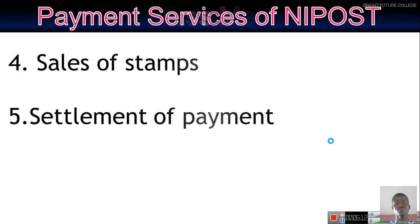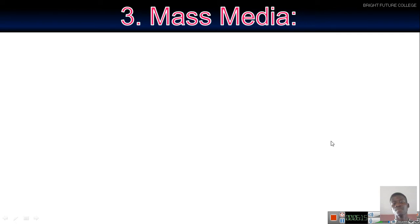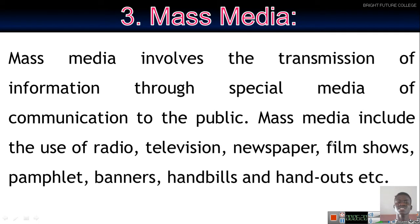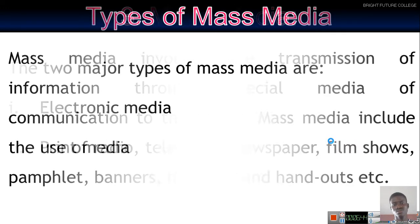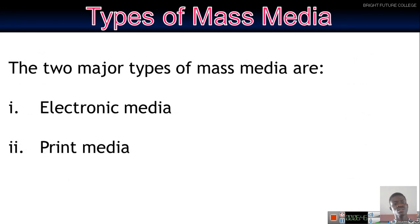Let's look at mass media as an element of communication in Nigeria. Mass media involves the transmission of information through special media of communication to the public. From the name 'mass,' your mind should go to the public — it must cover a large range of audience. Mass media includes the use of radio, television, newspaper, films, shows, pamphlets, banners, handbills, and handouts. Mass media is classified into two: electronic media and print media.